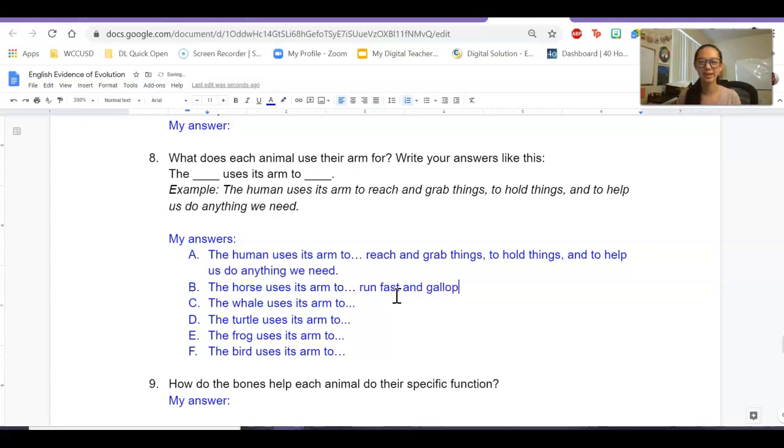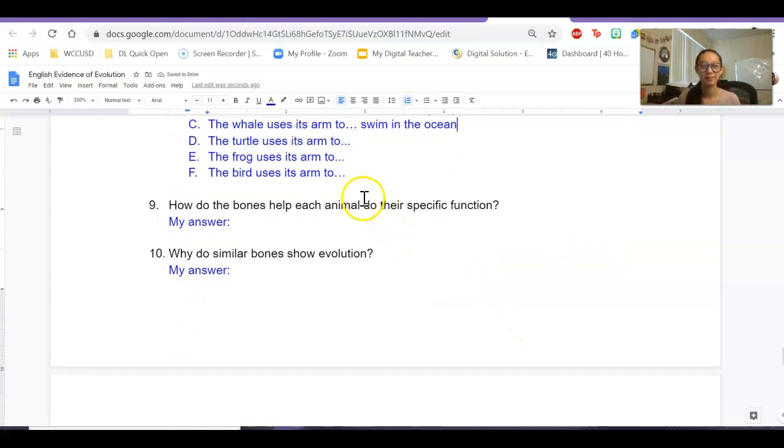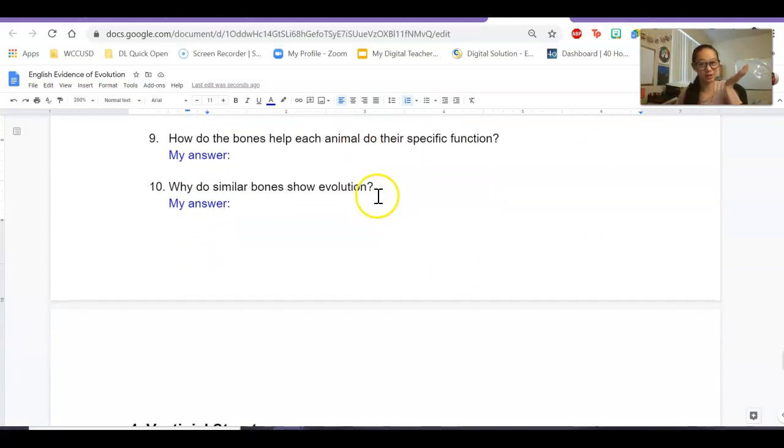And gallop, galloping is like jumping. What does a whale use its arm for? The whale uses its arm to swim in the ocean. So you're going to do that for all of them. You're going to tell me what did they use their arms for?